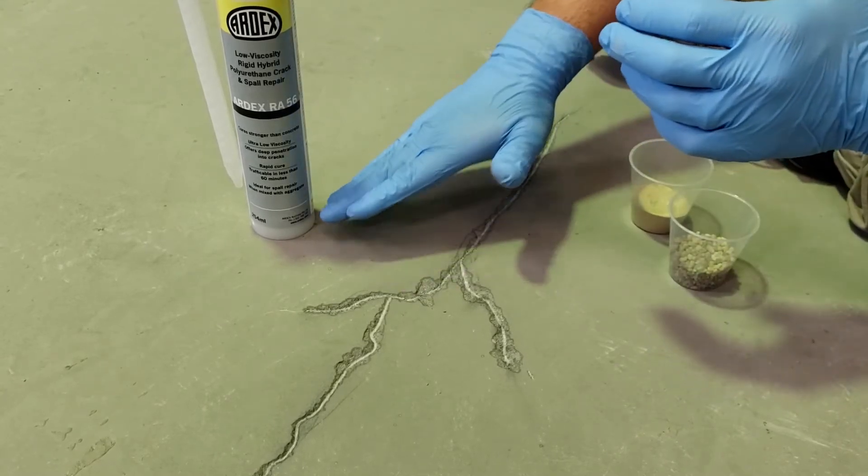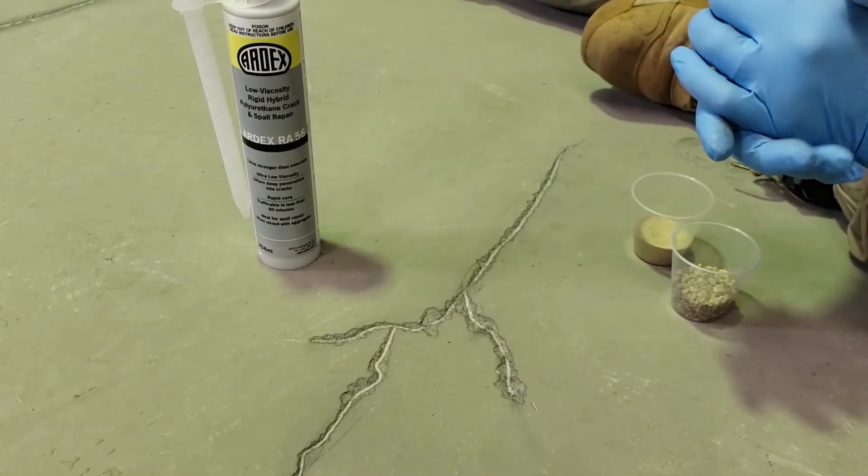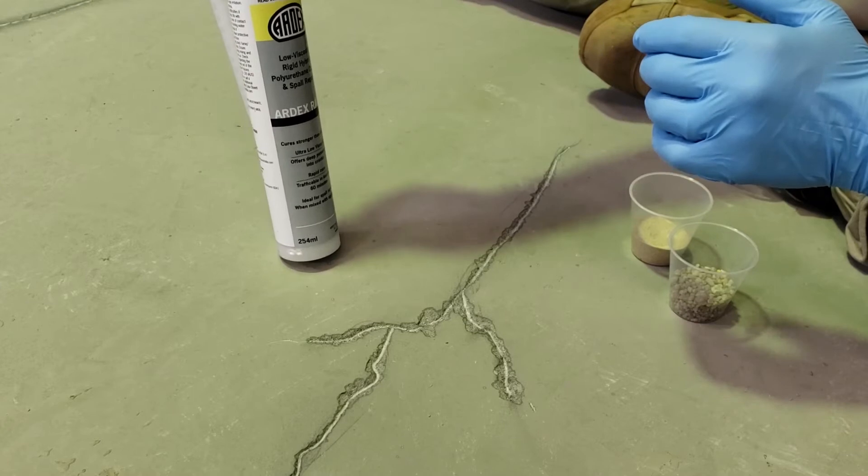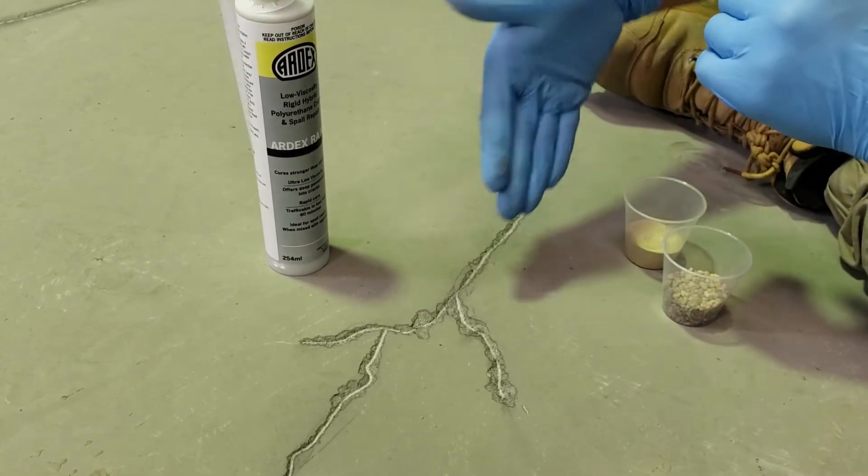Once again, you've got your part A and part B within the mix. This is not an epoxy. It's actually a polyurethane, so it's a polyurethane crack and spore repair, specifically to get into the cracks.